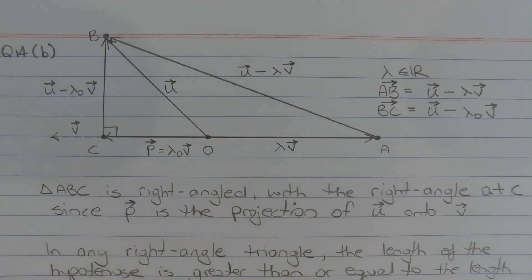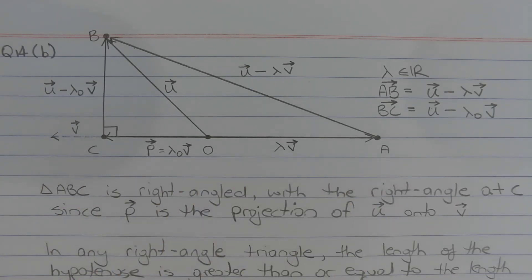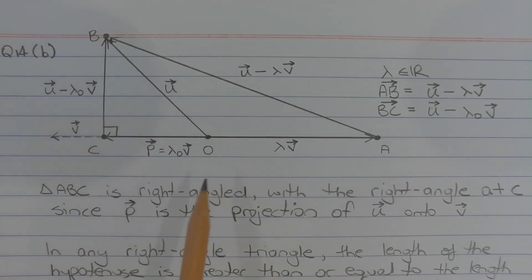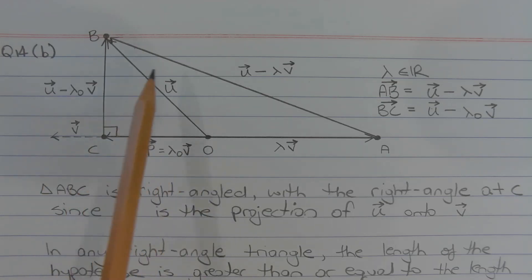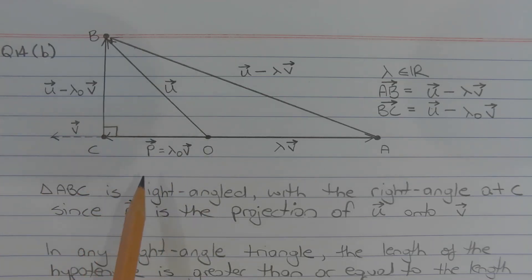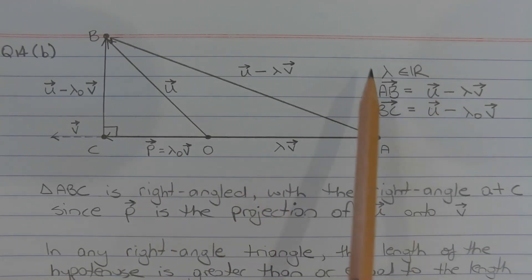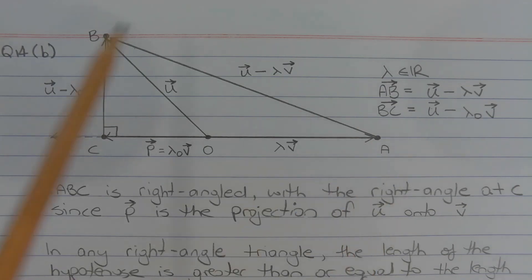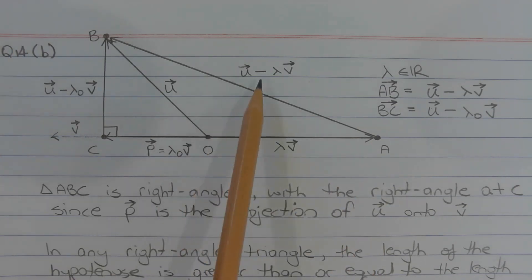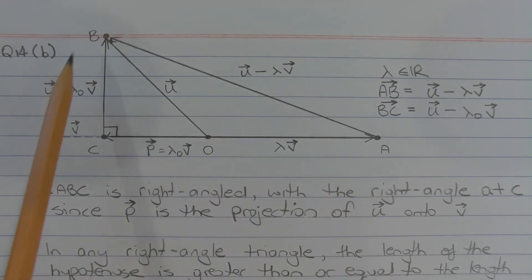Consider the following diagram. Let C, O, and A be collinear points on a plane. OB is the vector u. OC is the projection of u onto vector v, which is the vector p, which can be written as lambda_0 v. OA is lambda v, where lambda is some real number. AB is u minus lambda v, and BC is u minus lambda_0 v.